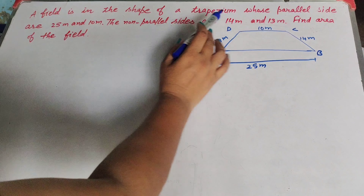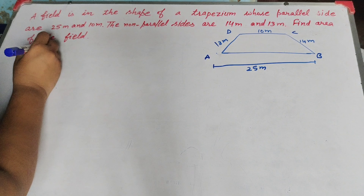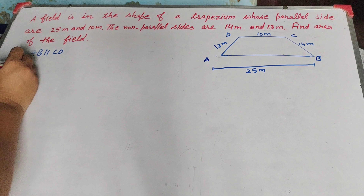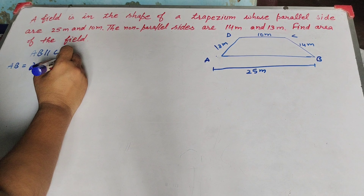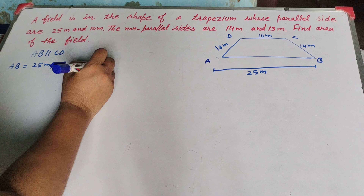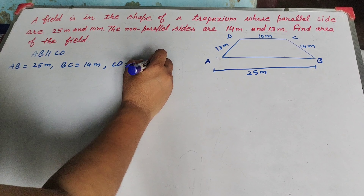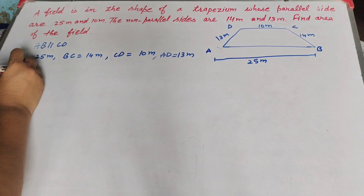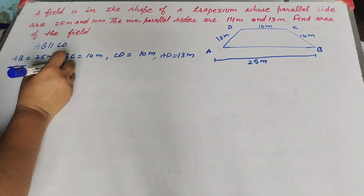The shape of the field is in the form of a trapezium. Let ABCD be a trapezium-shaped field. Its parallel sides are AB equal to 25 meter and CD equal to 10 meter. The non-parallel sides are BC equal to 14 meter and DA equal to 13 meter. We need to find the area of this field.